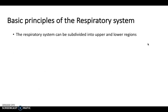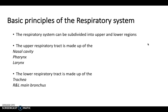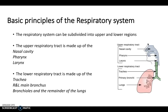The respiratory system is subdivided anatomically into upper and lower regions. The upper respiratory tract consists of the nasal cavity, the pharynx, and the larynx. The lower consists of the trachea, right and left main bronchi, bronchioles, and the remainder of the lung. Anything below the larynx is classed as the lower respiratory tract — important for classifying infections as upper or lower respiratory tract infections.